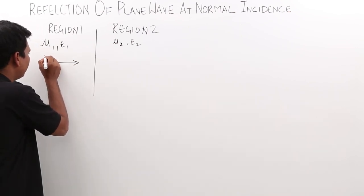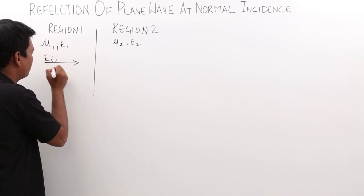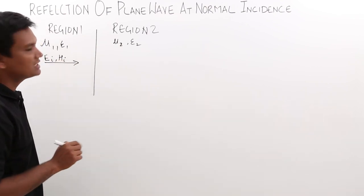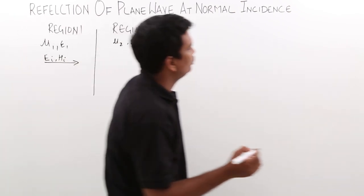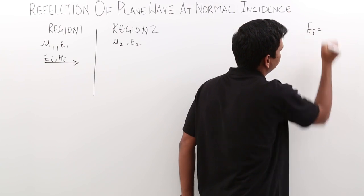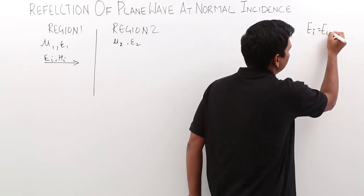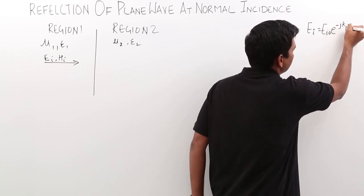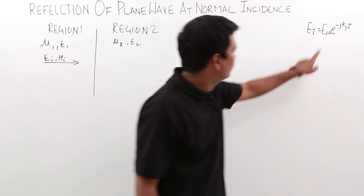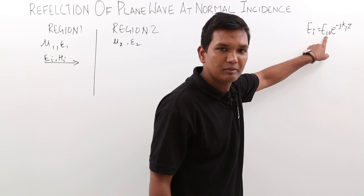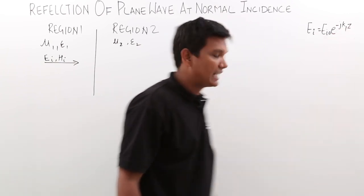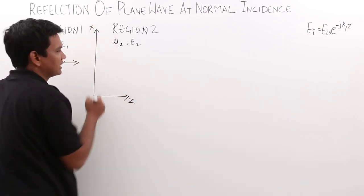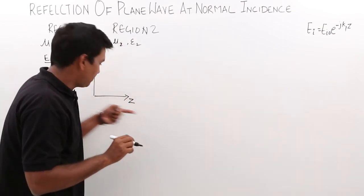The incident wave will have EI and HI — the incident electric field and the incident magnetic field. My EI would be nothing but EIO times e to the power minus j k1 z. EIO is the initial amplitude or magnitude, and the wave is propagating in the plus z direction.